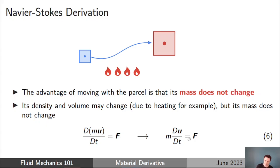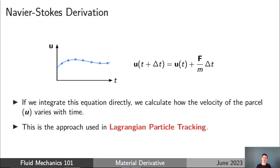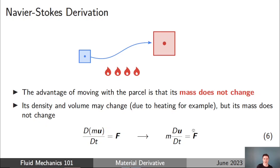We could solve that equation directly — integrating in time using something like an explicit Euler method — and that would tell us how the velocity of the parcel varies in time as it moves along its trajectory. Integrating that equation directly is actually the approach used in Lagrangian particle tracking. But that's not what we want here: we don't want just the velocity of that single parcel. We want the Navier-Stokes equations applicable to the entire fluid domain, with variation in space as well as time.